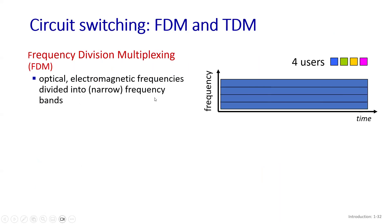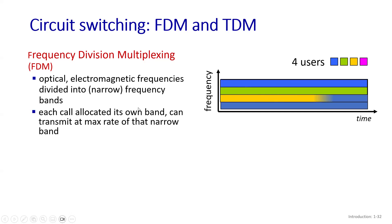Within circuit switching, there are two techniques to divide link capacity among users: frequency division multiplexing (FDM) and time division multiplexing (TDM). In FDM, the channel is divided into frequency channels depending on the number of users. For example, if the link capacity is 4 megabits per second and divided among four users, every user gets 1 megabit per second. If one user is inactive, that bandwidth goes to waste.